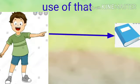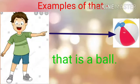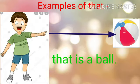Now let us discuss the use of 'that'. We use the word 'that' to describe the object which is not near to us. If the object is far from us, then we use the word 'that'. For example: 'That is a ball.' Here you can see the ball is far away from the boy, that's why we have used the word 'that'.